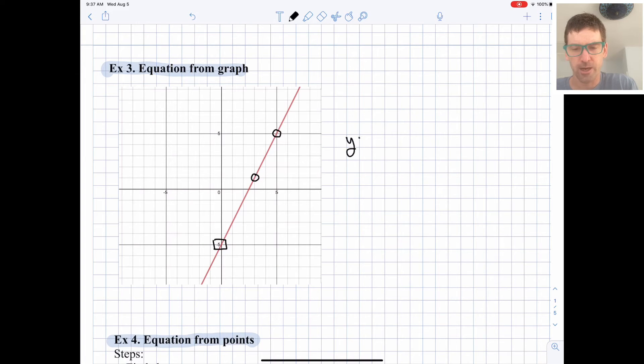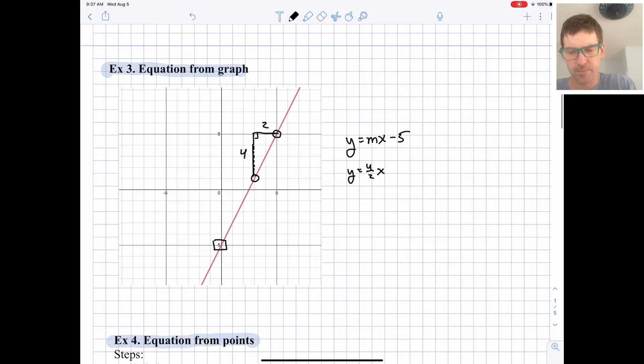Right away we can write out y equals mx minus 5. But let's work on finding the slope. Probably the easiest way if we're given the graph is to just draw a slope triangle. We get a rise of 1, 2, 3, 4 and a run of 2. So our slope is 4 over 2 which simplifies down to 2. So y equals 2x minus 5.